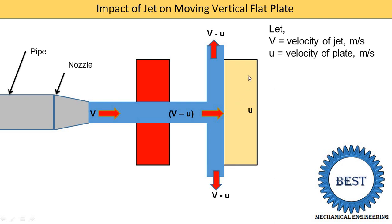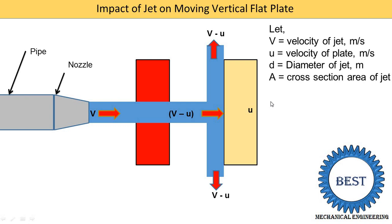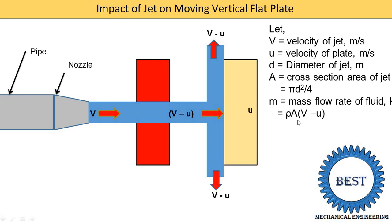The parameters are: V is the velocity of the jet, U is the velocity of the plate, D is the diameter of the jet, area A = (π/4)D², and M is the mass flow rate. In a fixed plate case, mass = ρAV, but in the moving plate case the equation changes: M = ρA(V − U). We use the relative velocity because water does not strike with velocity V, but with velocity V minus U.